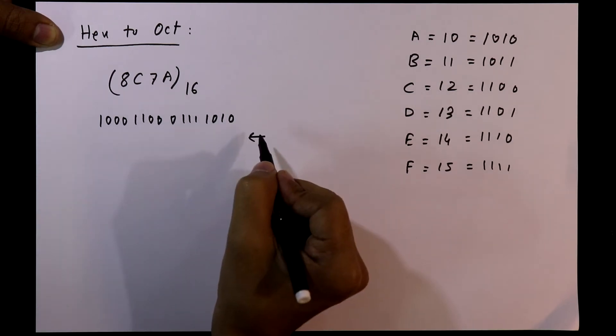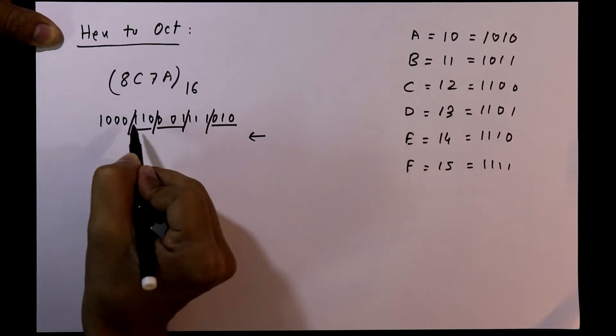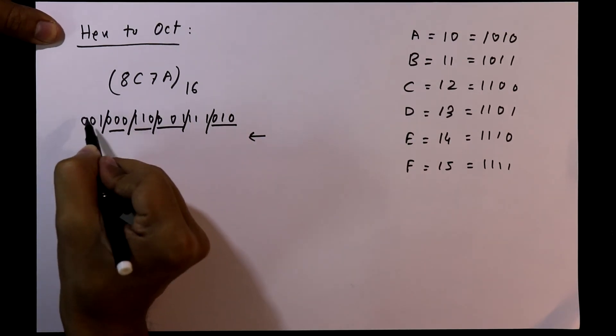Now divide this number in 3-bit from right side. And as it is only 1-bit, so we have to add 2 more zeros.